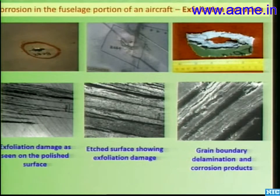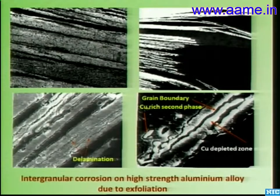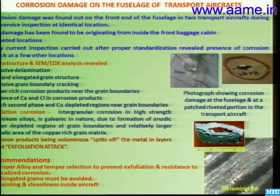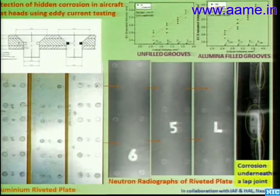Exfoliation corrosion was found in the fuselage region of a transport aircraft. Investigation found that the aluminum alloy skin used was of inferior quality and had not undergone proper heat treatment. Exfoliation through intergranular corrosion showed delamination and copper precipitation from intergranular corrosion, with layer-by-layer removal of material — confirming the mechanism as exfoliation. The skin had to be removed, and proper painting and surface cleanliness procedures were required to prevent recurrence.